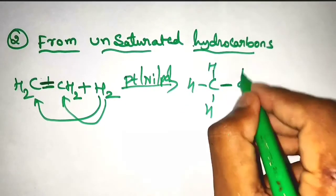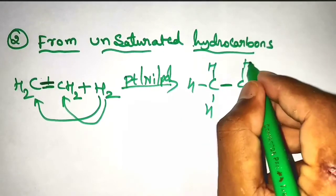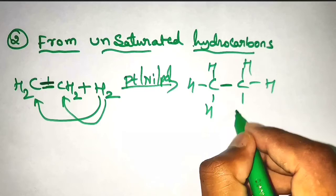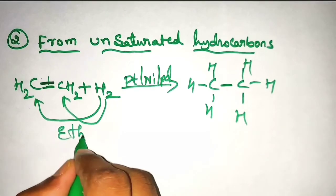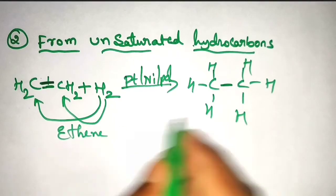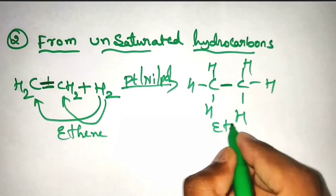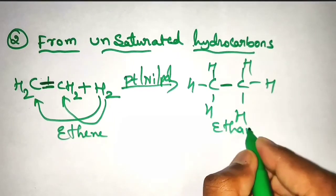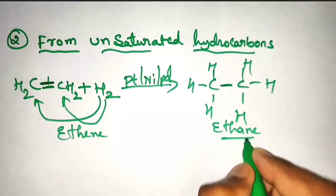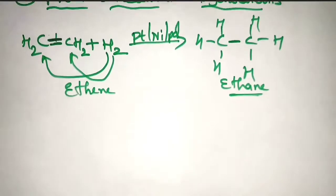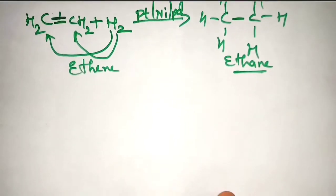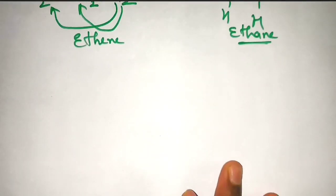See this type of compound you are going to get. This is ethane. From ethene to ethane, we have prepared it. Based on this, you can take many other examples. One more example I will take from alkenes.